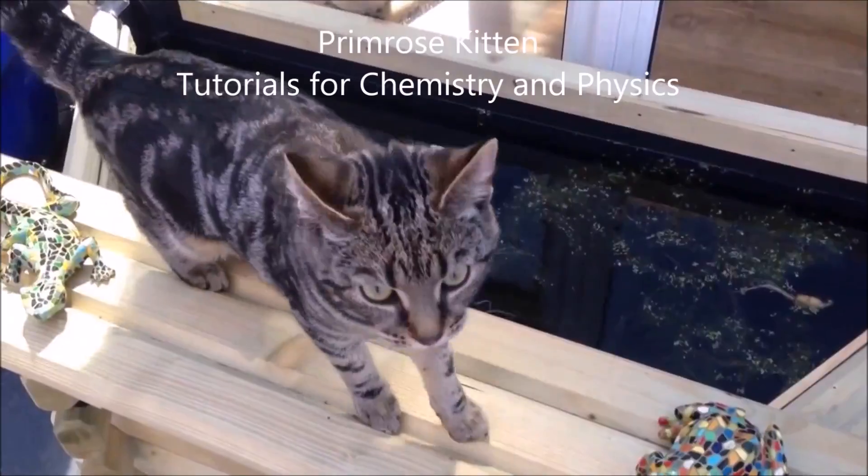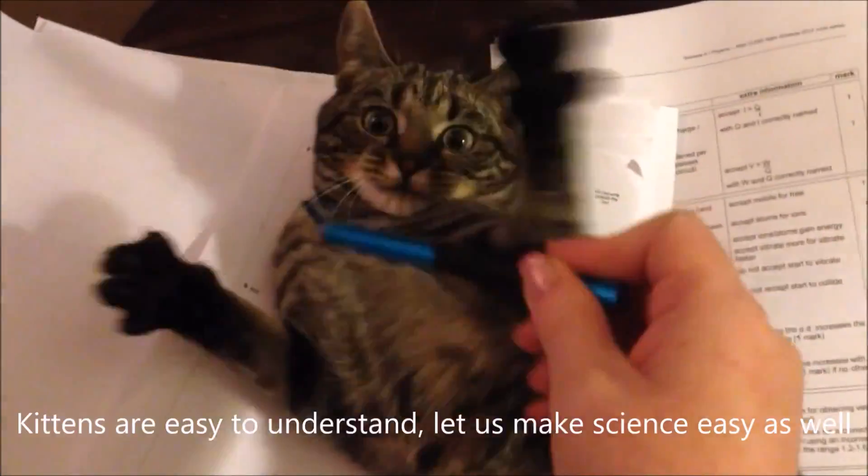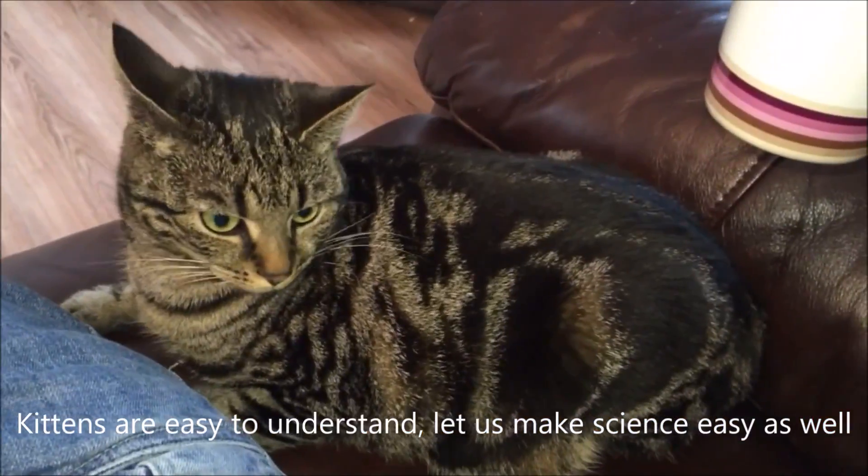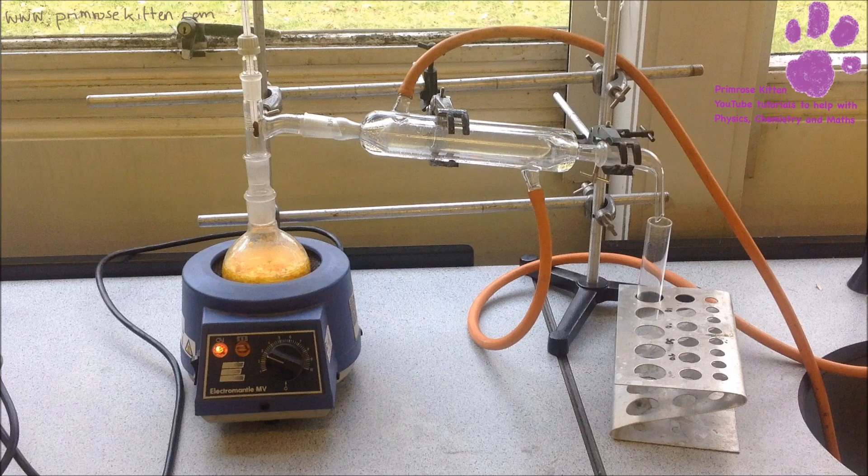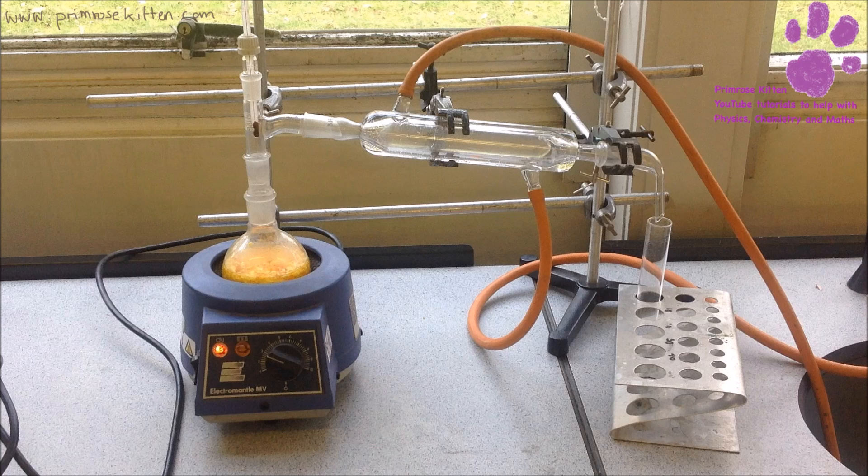There are two ways to get oils out of plants: by crushing or by distillation. Today we'll look at the distillation method.